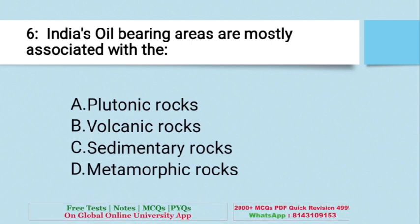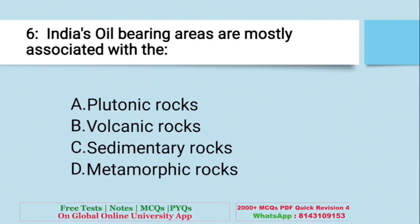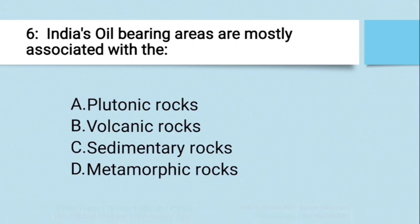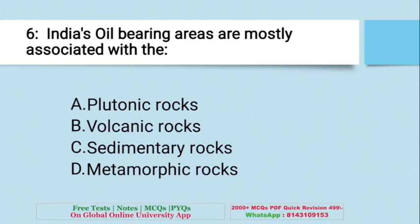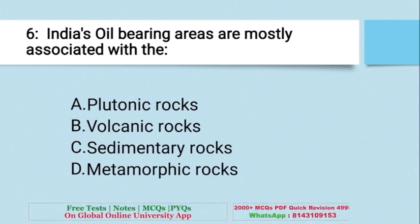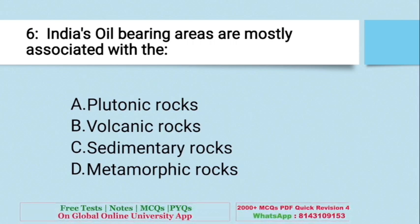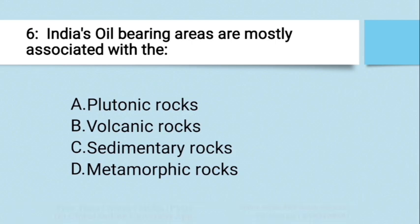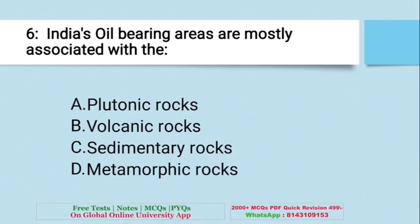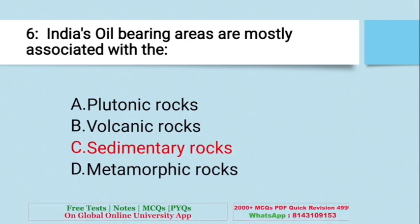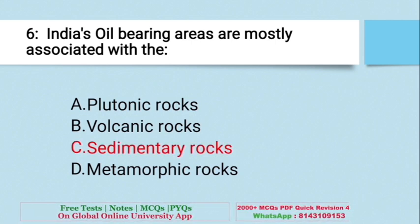Question: India's oil-bearing areas are mostly associated with — A. Plutonic rocks, B. Volcanic rocks, C. Sedimentary rocks, D. Metamorphic rocks. The right answer is C — Sedimentary rocks.